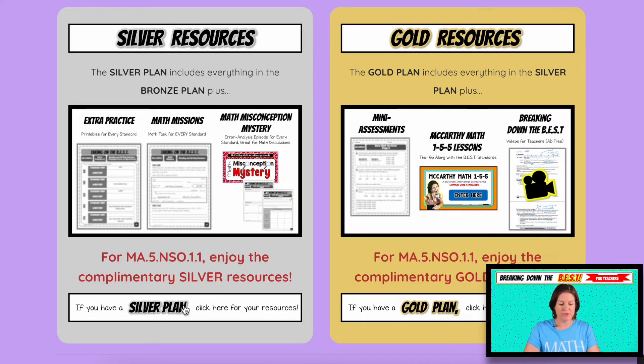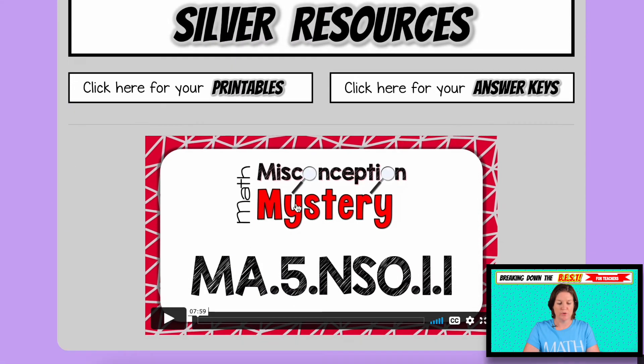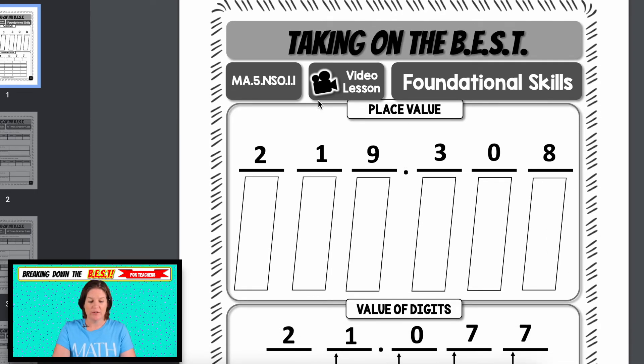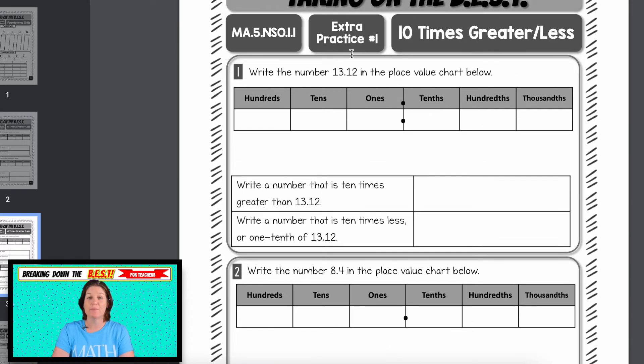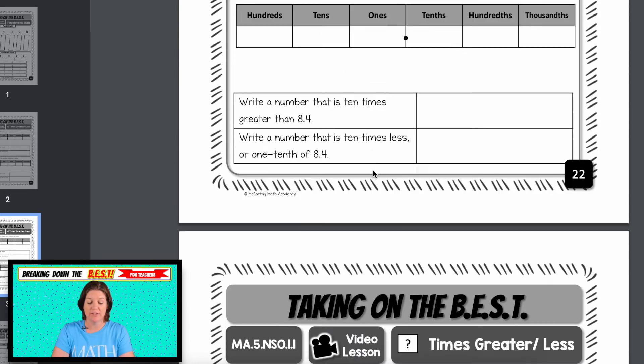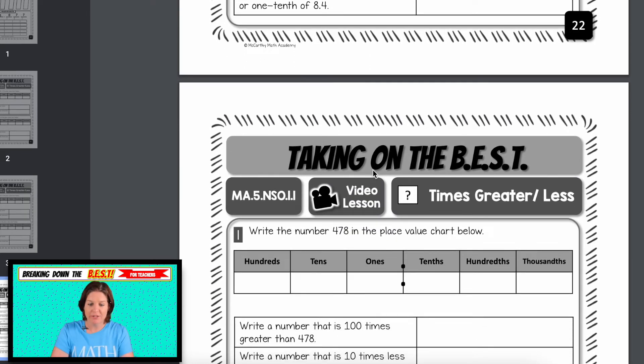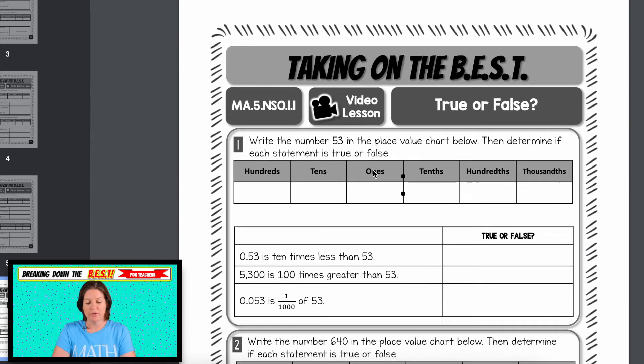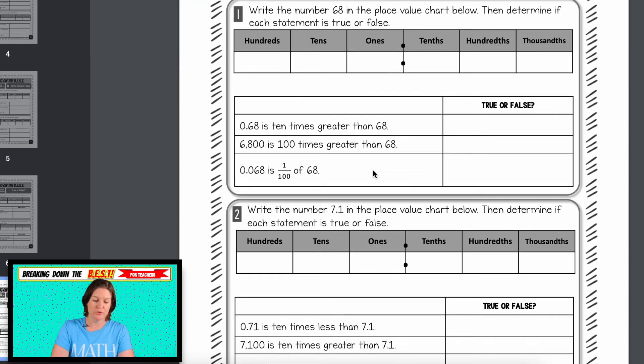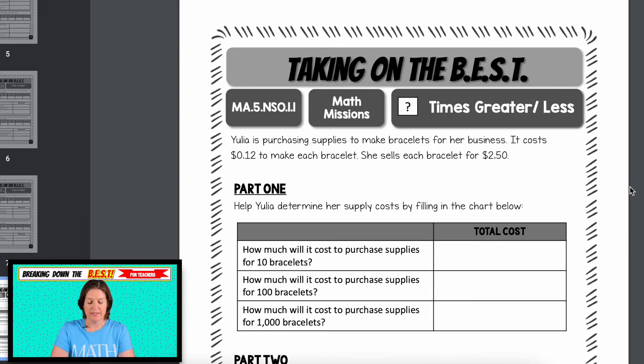Then everyone has access to the silver resources for this standard, which is cool. So you have printables, you have an answer key, and this math misconception mystery video, which I'll talk about in just a second. I'm clicking on the printables and you can tell this just kind of takes everything for the standard and just says, here it is, right? So we have the video lesson, you know, because it has a video icon, another video lesson. And then after we finished the video lesson, having some extra practice with that very similar to what we just did in the video lesson. That way students can build that confidence muscle and master the skills that they need. Video lesson, extra practice, video lesson with true or false, extra practice with true or false.